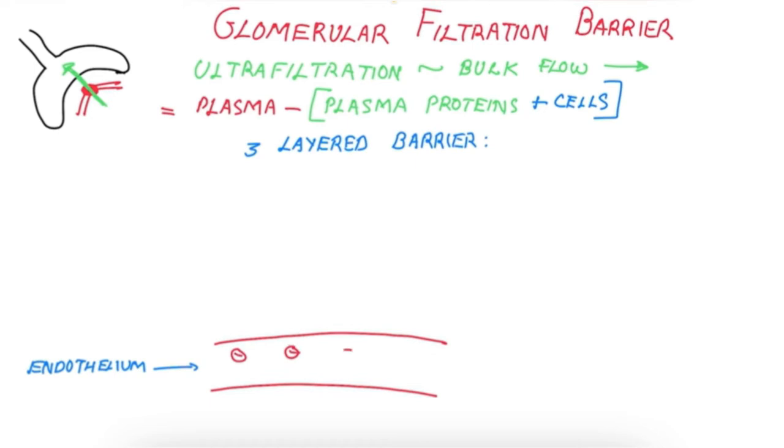It has these windows. They are called fenestra and they are negatively charged, so they repel plasma proteins. The endothelium is like a Swiss cake.